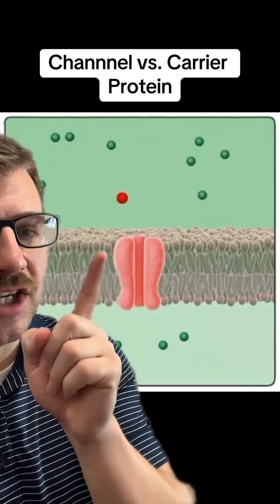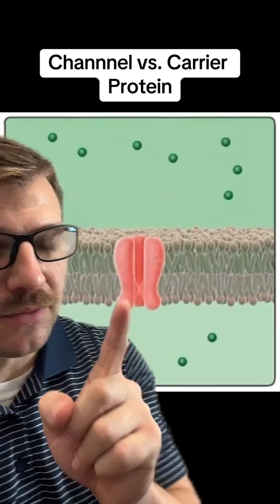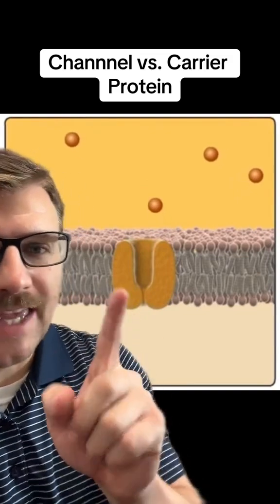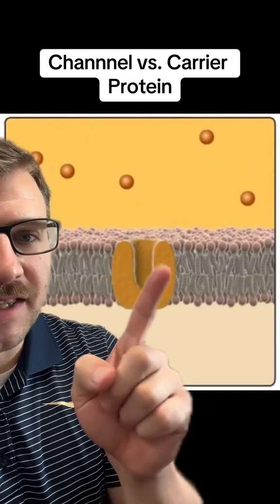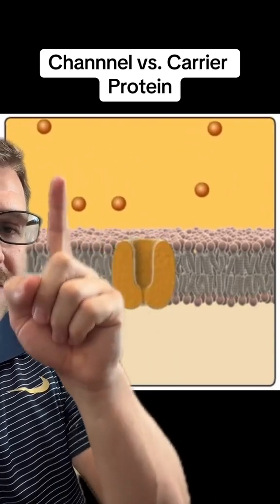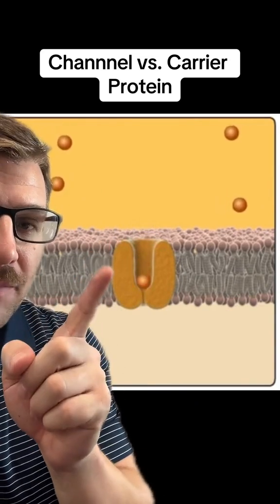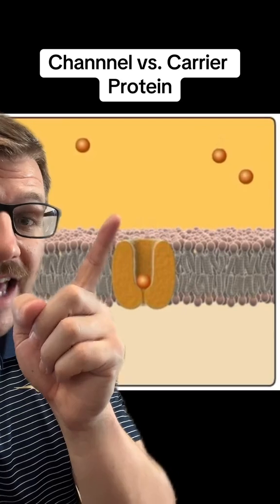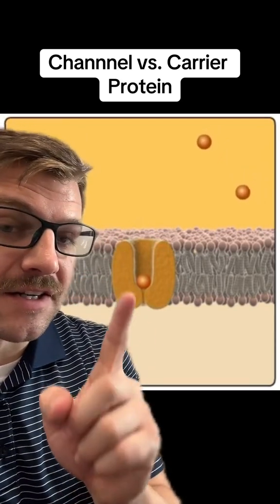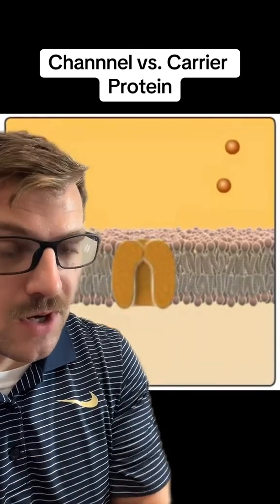Specifically, this molecule is not going to change shape and only allows usually one type of molecule through. Carrier proteins, however, will change shape. You can see this carrier protein embedded in the phospholipid bilayer, and these molecules outside the cell need to get in. The carrier protein changes shape, allowing these molecules through. The major difference is the carrier protein will change shape while the channel protein won't.